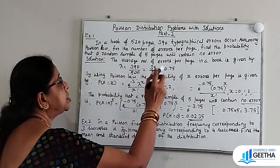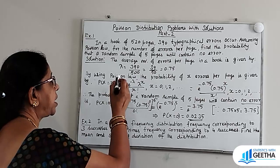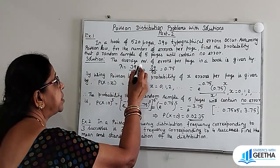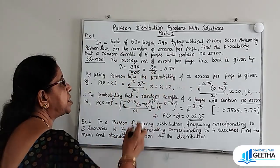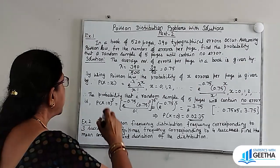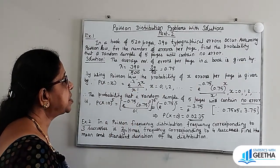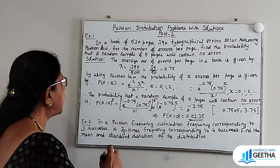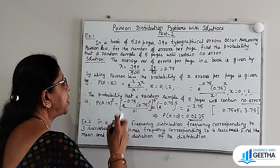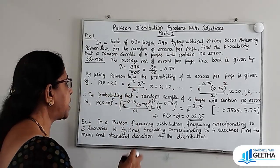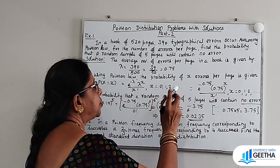Solution. The average number of errors per page in a book is given by lambda. That is 390 by 520, which is 0.75. By using Poisson law, the probability of x errors per page is given by P(X=x) = e^(−λ) · λ^x / x!, where x takes values 0, 1, 2, etc.